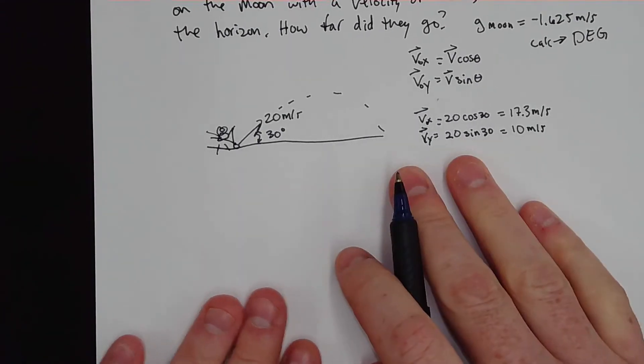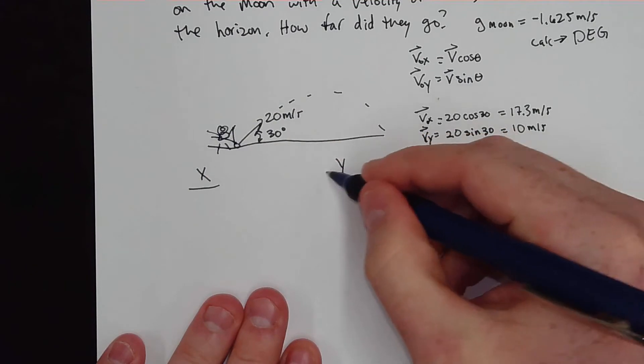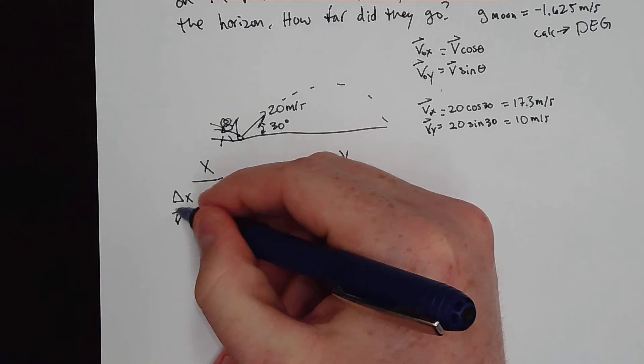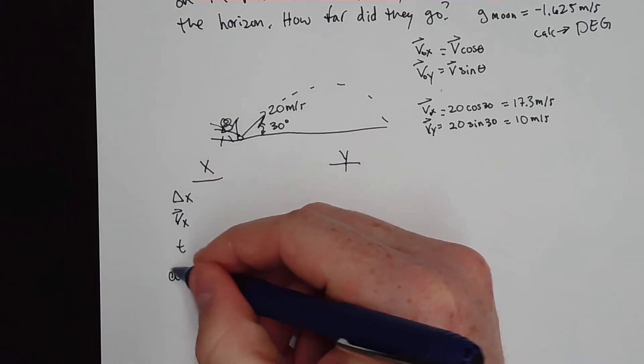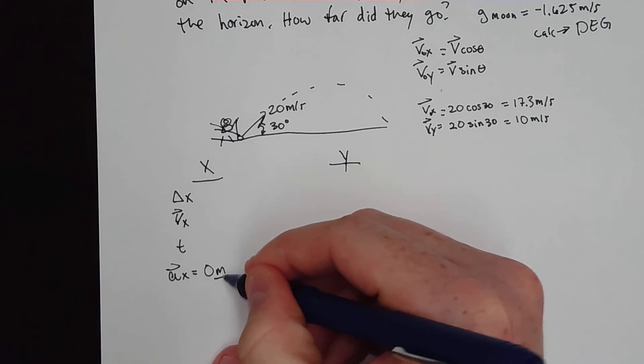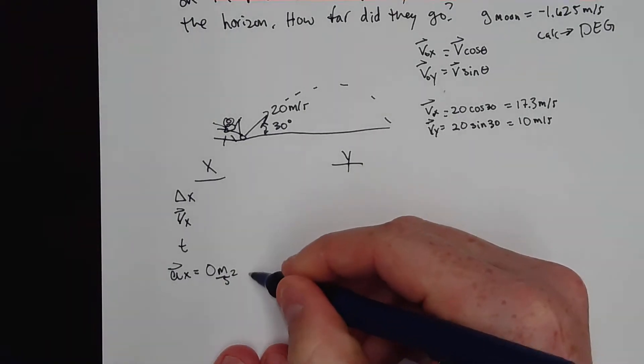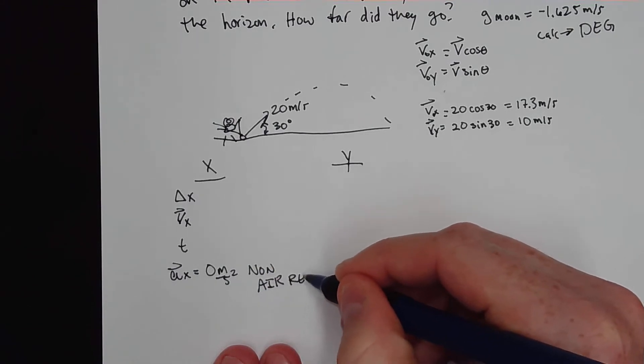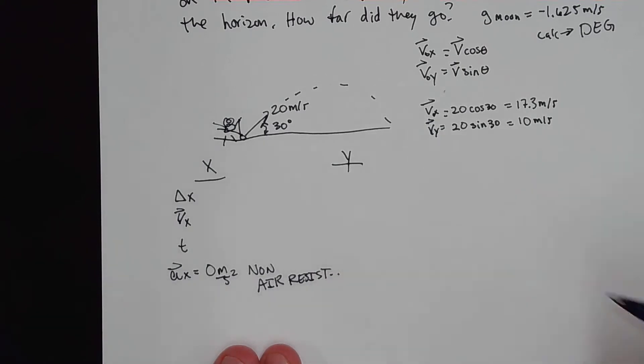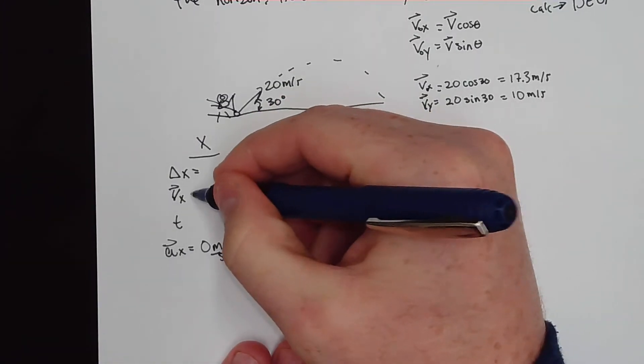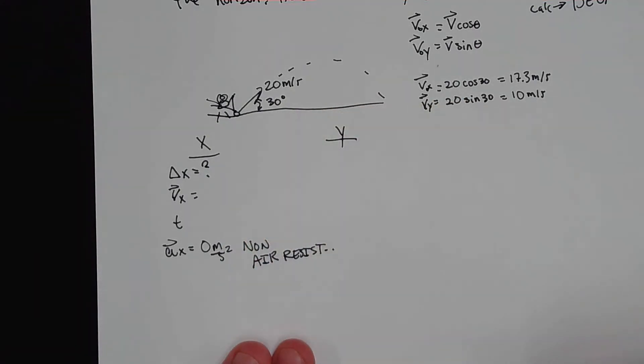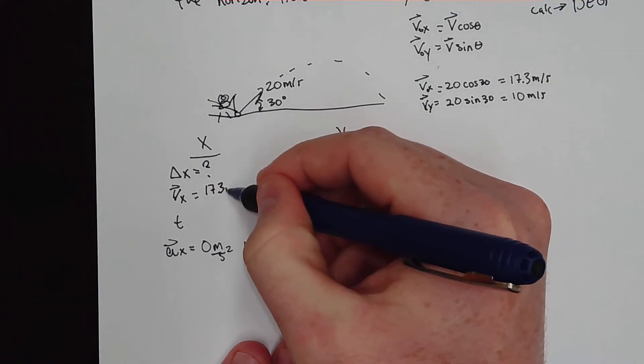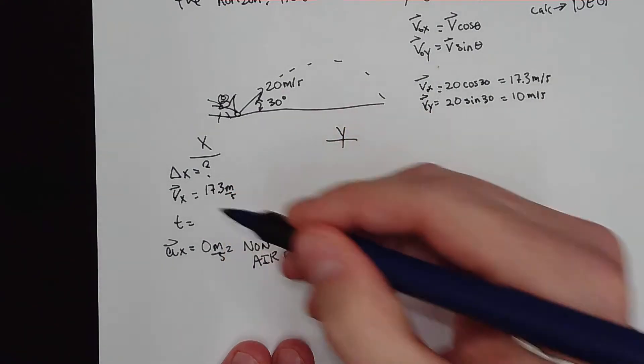So now, we have these, we need to break it into x and y variables. Now remember, the only three things you need to write in the x direction are the displacement in the x, the velocity in the x direction, and the time. The reason for that is the acceleration in the x direction is zero, especially in this problem. The reason being is there is no air resistance. So we are looking for our displacement, so I like to put a little question mark there. And we know our velocity in the x direction is 17.3. And we do not have our time.